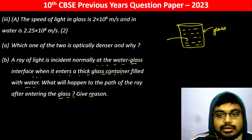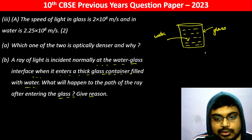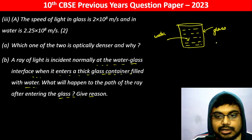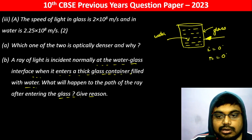The ray of light is incident normally at the water-glass interface, then it enters a thick glass container filled with water. Since the ray is incident normally, the angle of incidence is zero degrees, so the angle of refraction is also zero degrees. This ray will go undeviated.